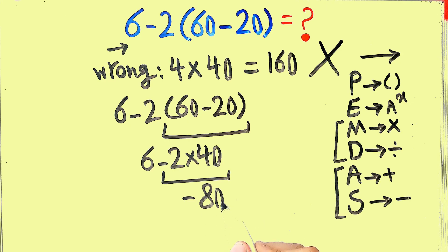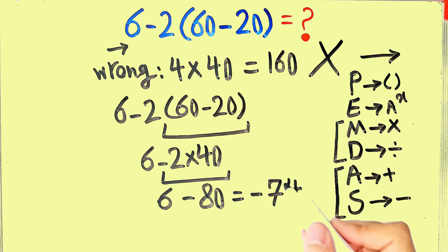And 6 minus 80 equals negative 74. The final answer of this question equals negative 74. Thanks for watching guys.